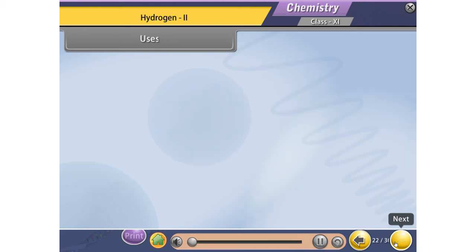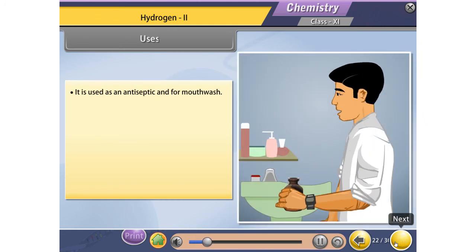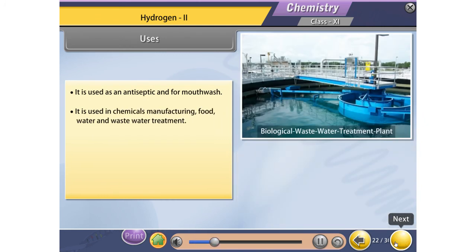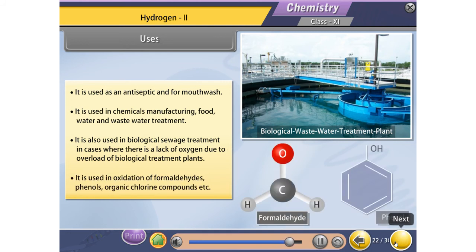Uses: It is used as an antiseptic and for mouthwash. It is used in chemicals manufacturing, food, water and wastewater treatment. It is also used in biological sewage treatment in cases where there is a lack of oxygen due to overload of biological treatment plants. It is used in oxidation of formaldehydes, phenols, organic chlorine compounds, etc.